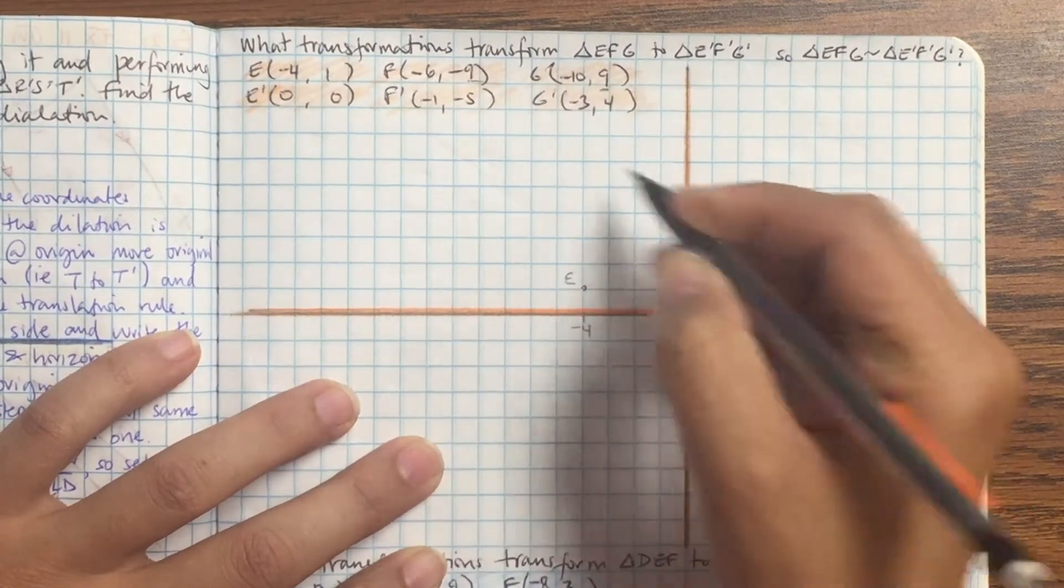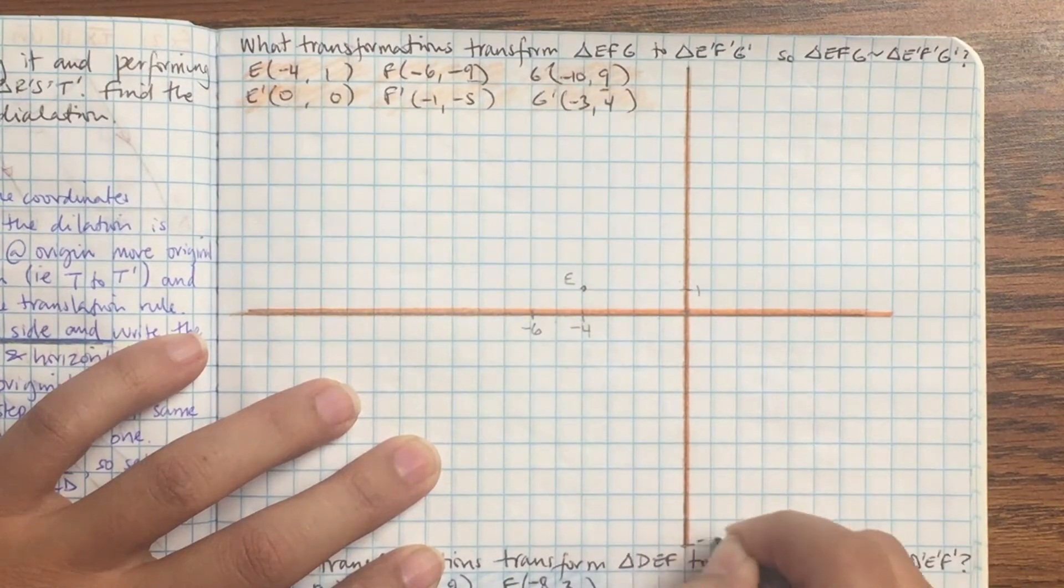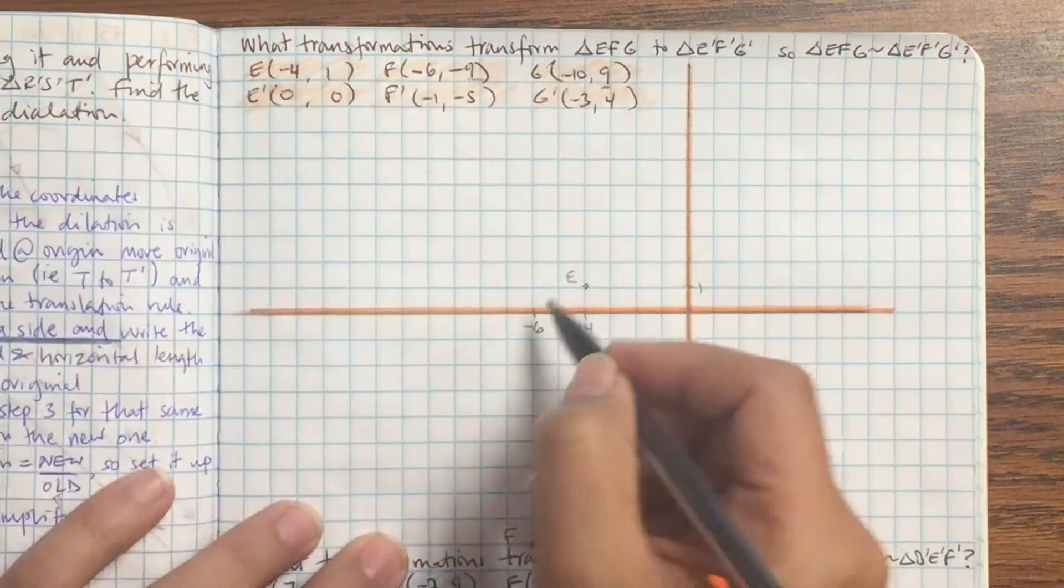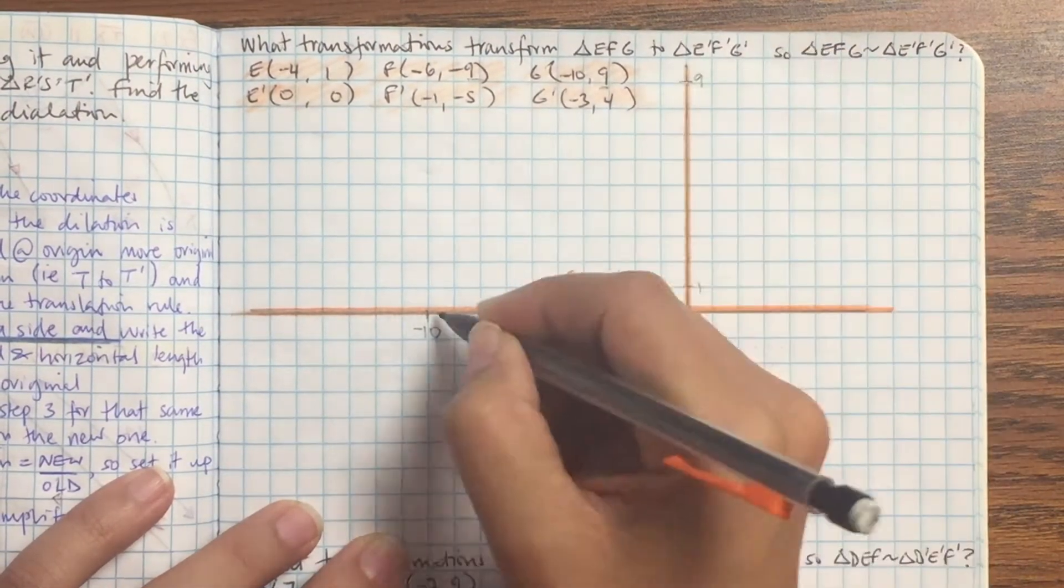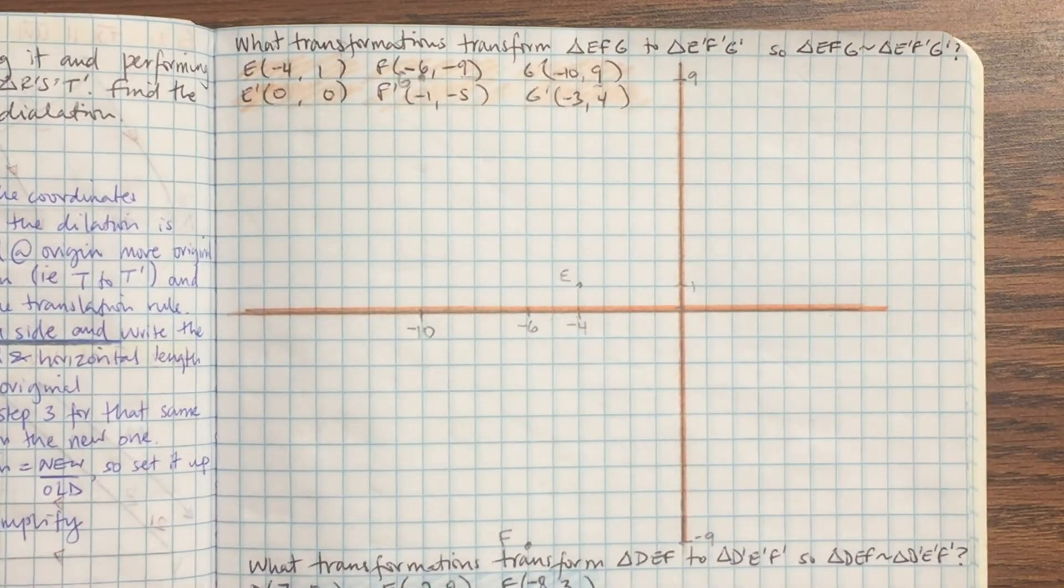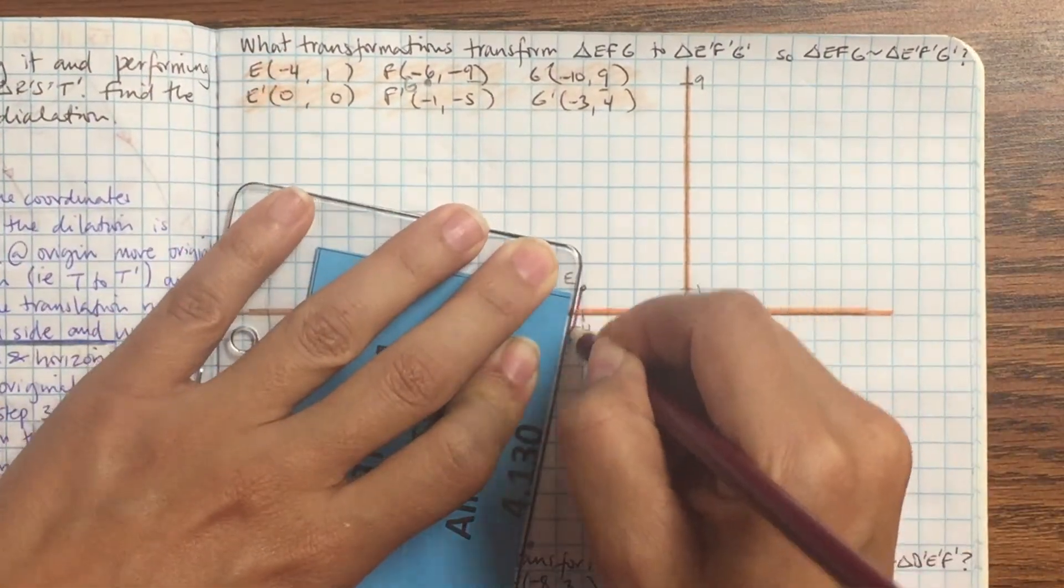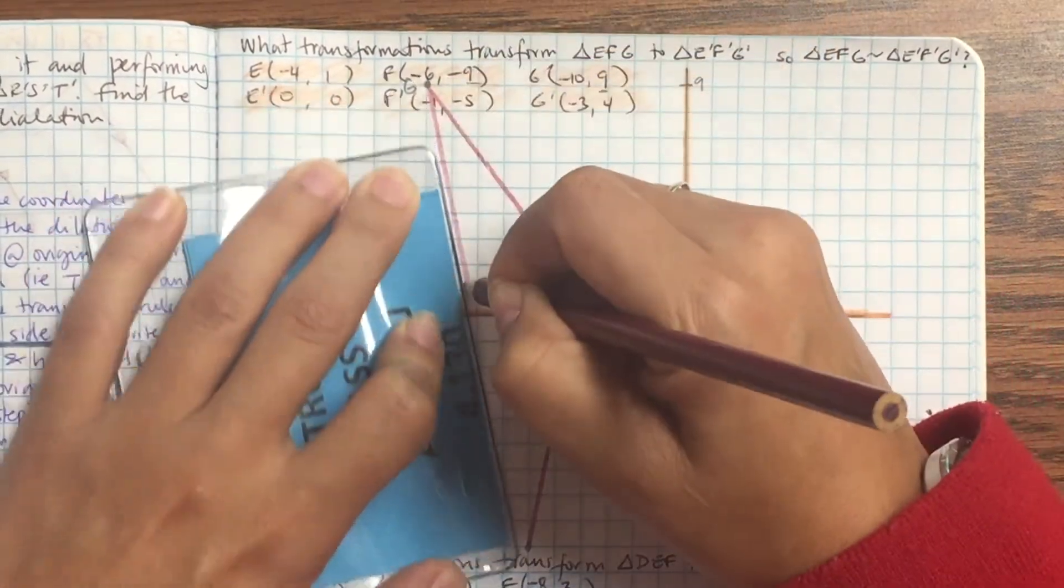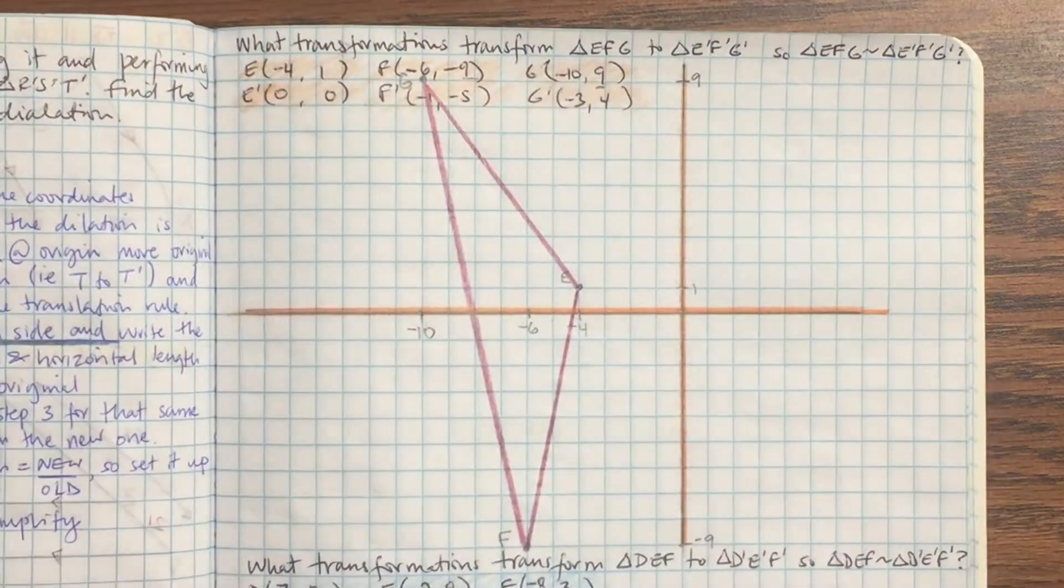Let's take a look at another example. So plot negative 4, 1, negative 6 negative 9, left 6 down 9, negative 10, 9, left 10 up 9. This is a listening check, color in the two symbols of the triangles in the question. So triangle EFG, triangle E prime F prime G prime. And hey, if you don't have a ruler that's okay, just use an ID or something, anything that's straight. As you can see, I'm using a restroom pass.